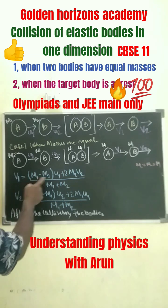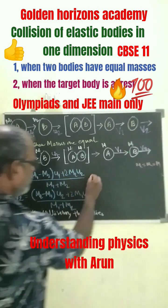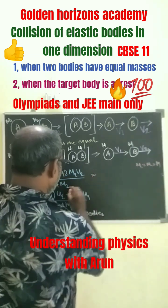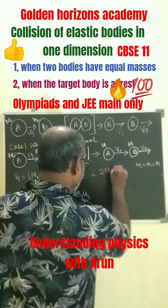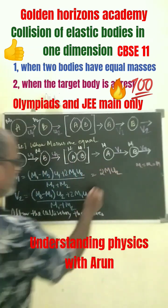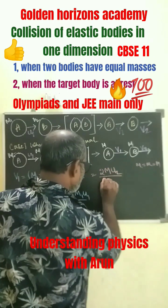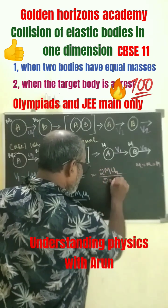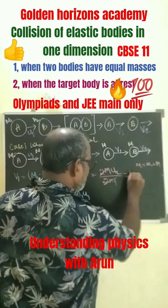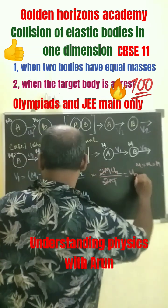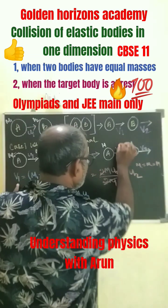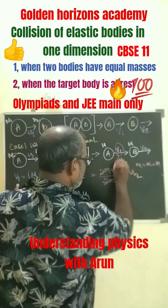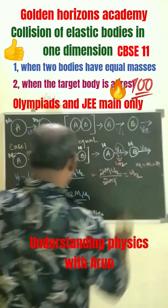So instead of M1 and M2 we substitute M. This causes the difference term to become 0, and finally we get 2M·U2 divided by 2M. The 2M cancels off and it becomes U2. That means V1 has become U2.